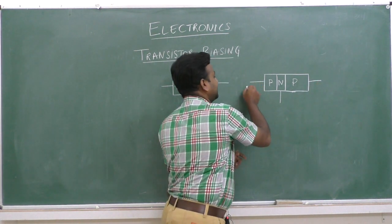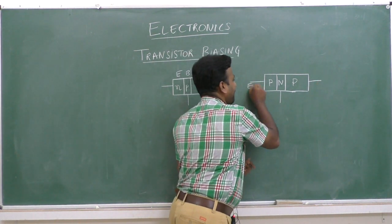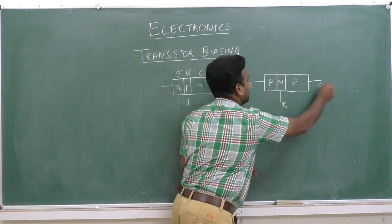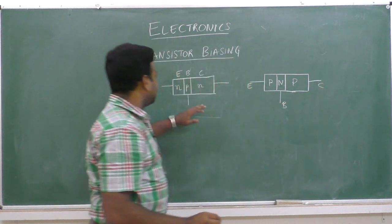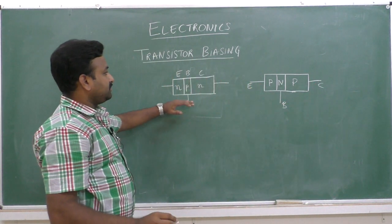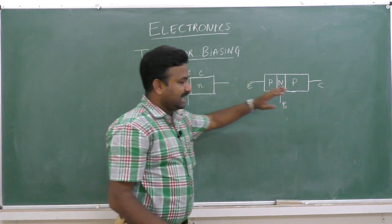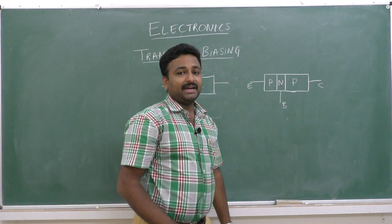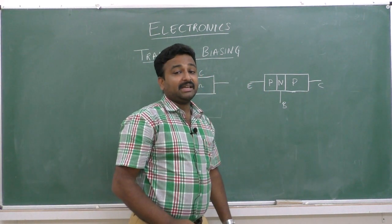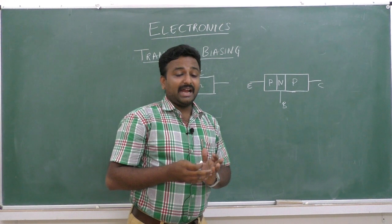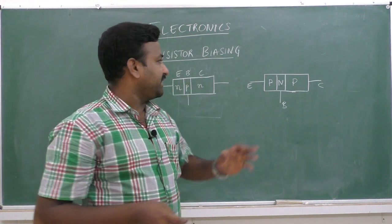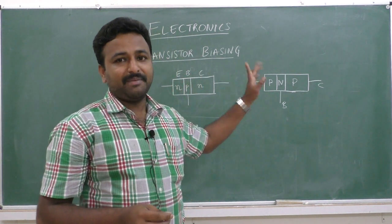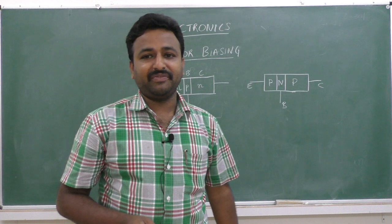So we have emitter, base, and collector. This is the NPN transistor and this is the PNP transistor. The circuit symbol of the transistor is different for both PNP and NPN transistors.